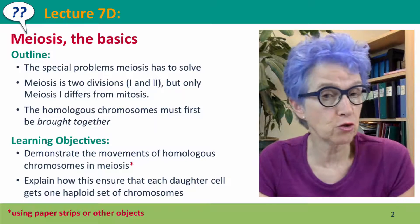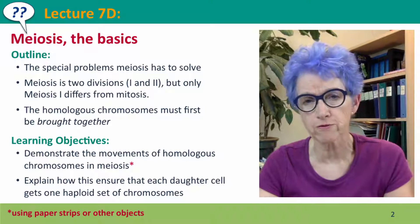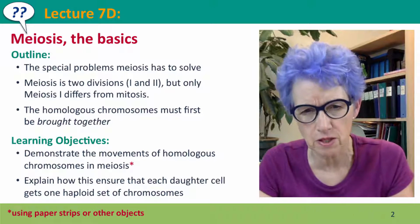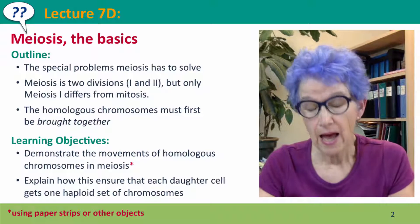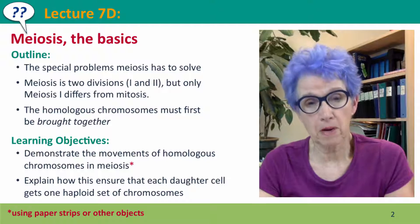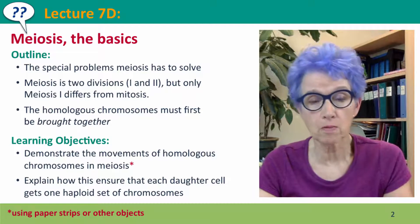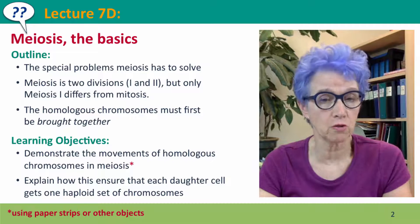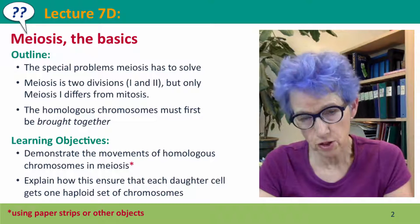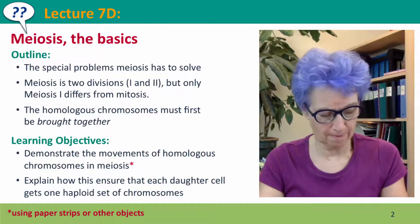Meiosis is two divisions, but we'll focus almost entirely on the first division because the second division is basically identical to mitosis. The first problem that meiosis has is going to be solved by bringing the homologous chromosomes together so they can be treated as pairs, in the same way that mitosis treats the sister chromatids.